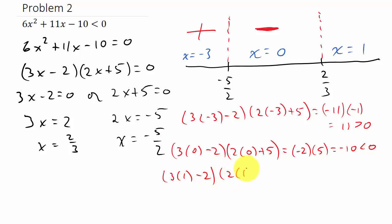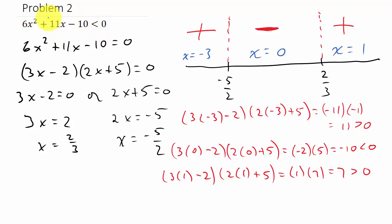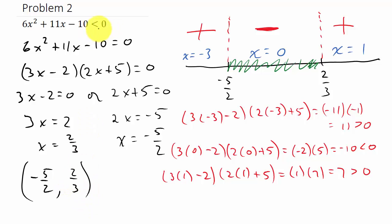We want to know when the quadratic is less than 0 — when it's negative. That occurs in the middle region. So the solution is everything from negative 5/2 to 2/3, with parentheses because the inequality is strict — not equal to zero — so the endpoints are not included.